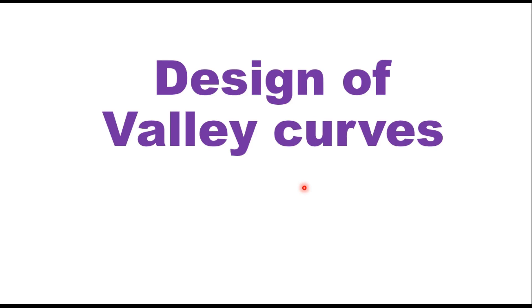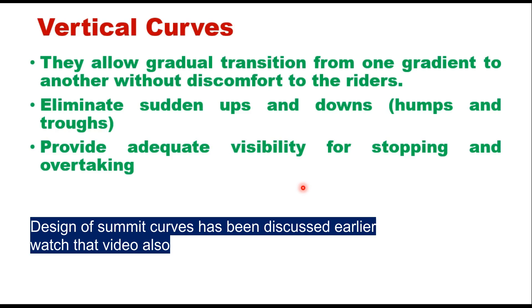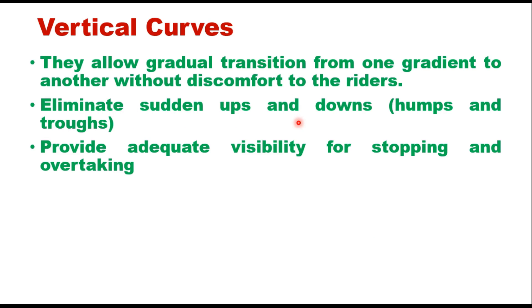Hello friends, today we will discuss design of valley curves. The vertical alignment of a road has great influence upon the construction cost, vehicle operating cost, and safety of vehicles. Vertical curves are provided whenever there is a change in the gradient. They allow gradual transition from one gradient to another without discomfort to the riders, and also eliminate sudden ups and downs and provide adequate visibility for stopping and overtaking.